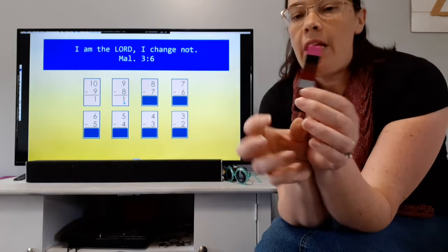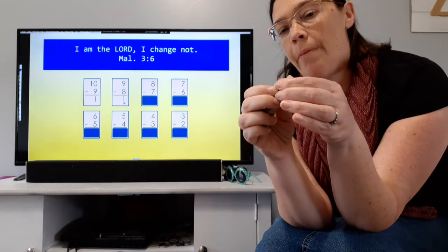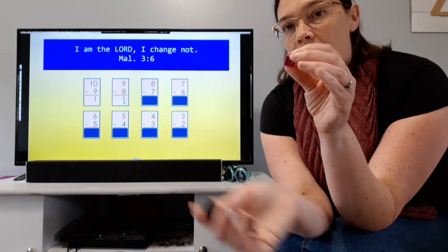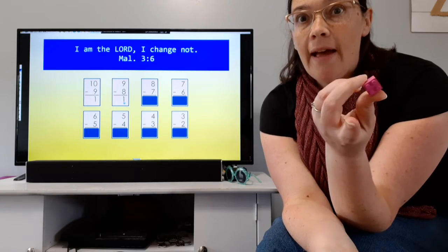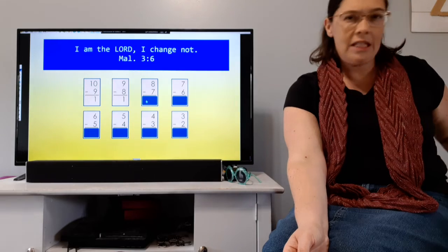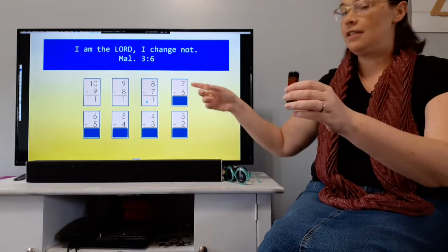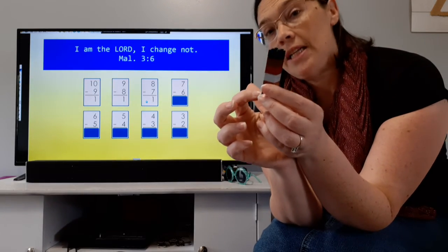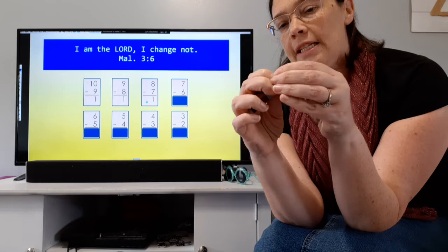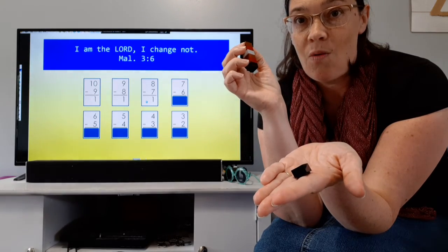Now I have 8 left. Let's take away 7: 1, 2, 3, 4, 5, 6, 7. Pop that off. 8 minus 7 equals 1. Again, what are the odds? 8 minus 7 equals 1. Are you seeing a pattern here? I hope you're seeing a pattern here. Now I have 7 left. 7 minus 6 — I'm going to take away 6: 1, 2, 3, 4, 5, 6. 7 minus 6 equals 1.